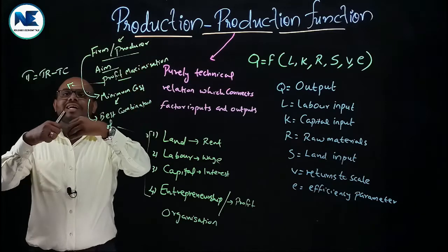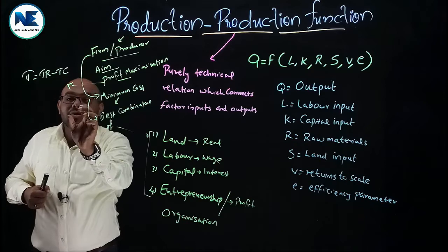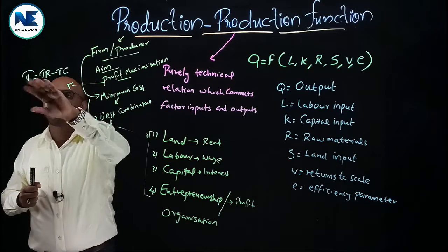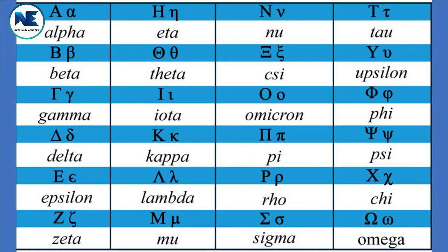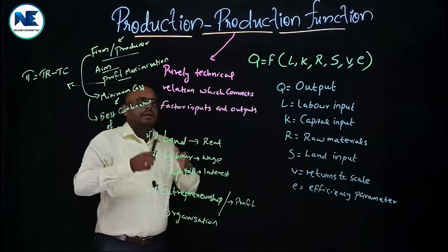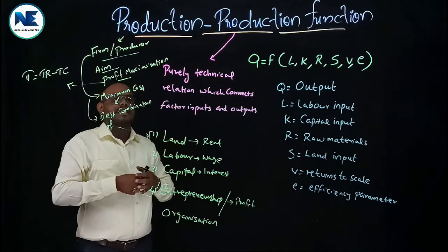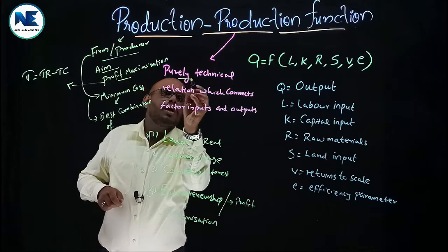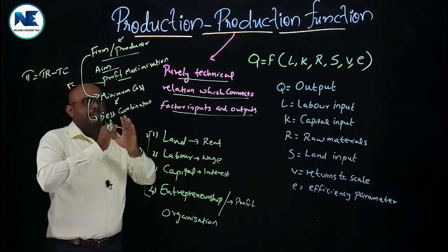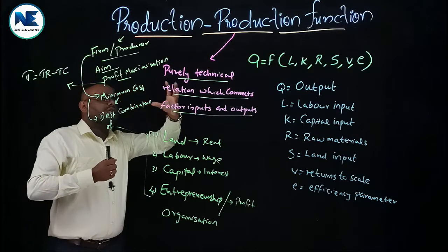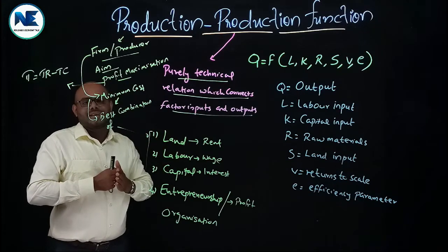So the firm is trying to make a huge difference between total revenue and total cost — revenue going up and cost going down — then only profit will be maximized. Now, the production function: it is a functional relationship between physical input and physical output. Simply put, production function is a purely technical relation which connects factor inputs and outputs.